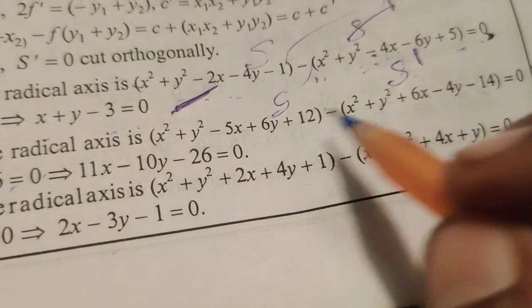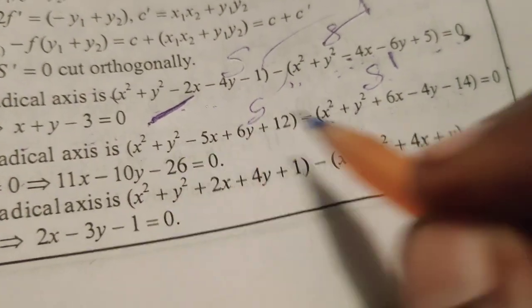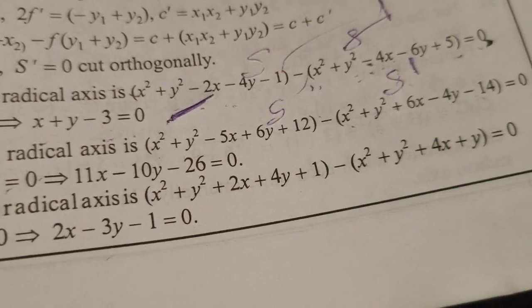Therefore, x square minus x square is 0, y square minus y square gets cancelled.